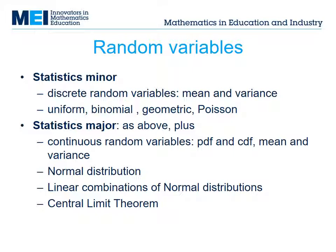The traditional topics include discrete random variables, their mean and variance in the minor option. The major option extends this to continuous random variables. Splitting the work in this way means that the options are co-teachable with AS and A-level Maths.